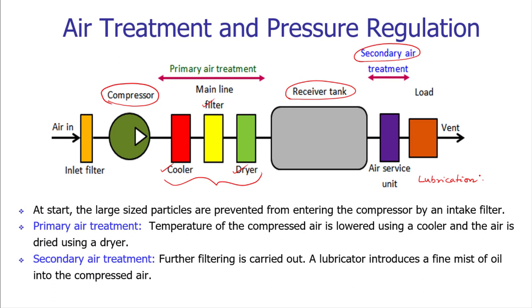At the start of the compressor itself, we use a filter to remove large size particles and protect the compressor. In the primary air treatment stage, temperature must be controlled — pressures increase very high inside the compressor, causing temperature to rise as well. So we need to cool down the compressed air. During cooling, there will be condensation of water vapors inside the air, which must be filtered out. For that purpose we need a dryer, and then the air is stored in the receiver tank.